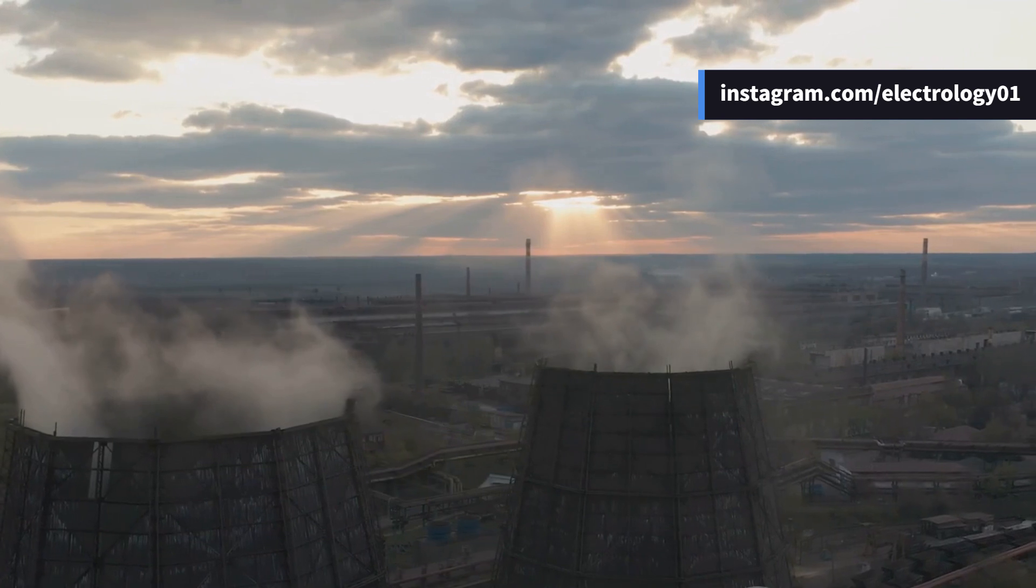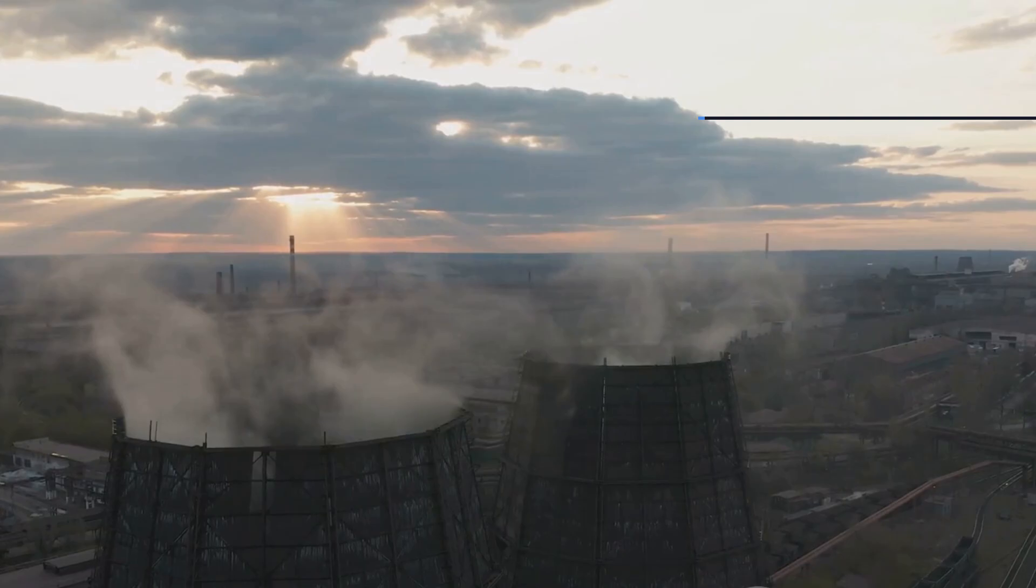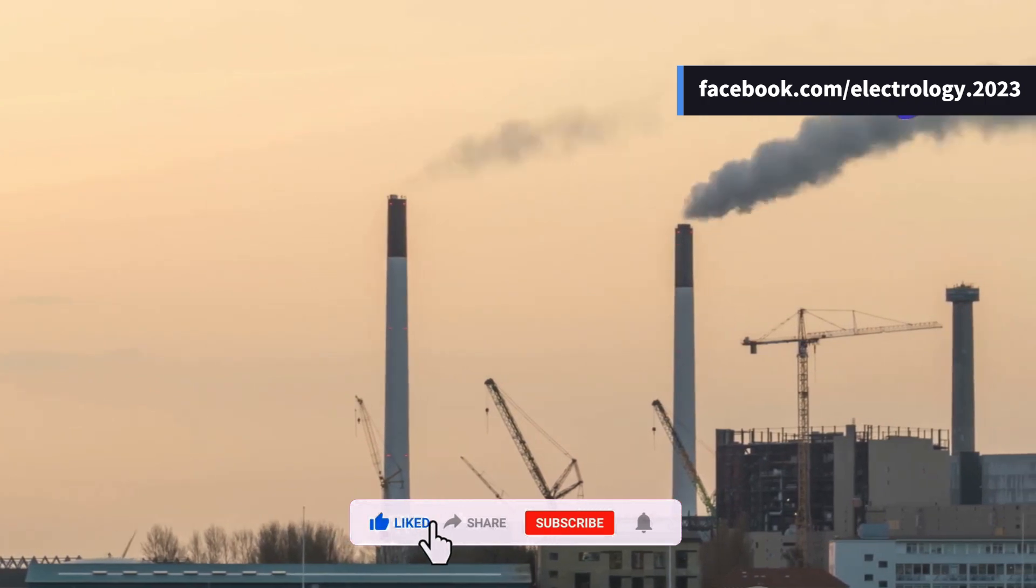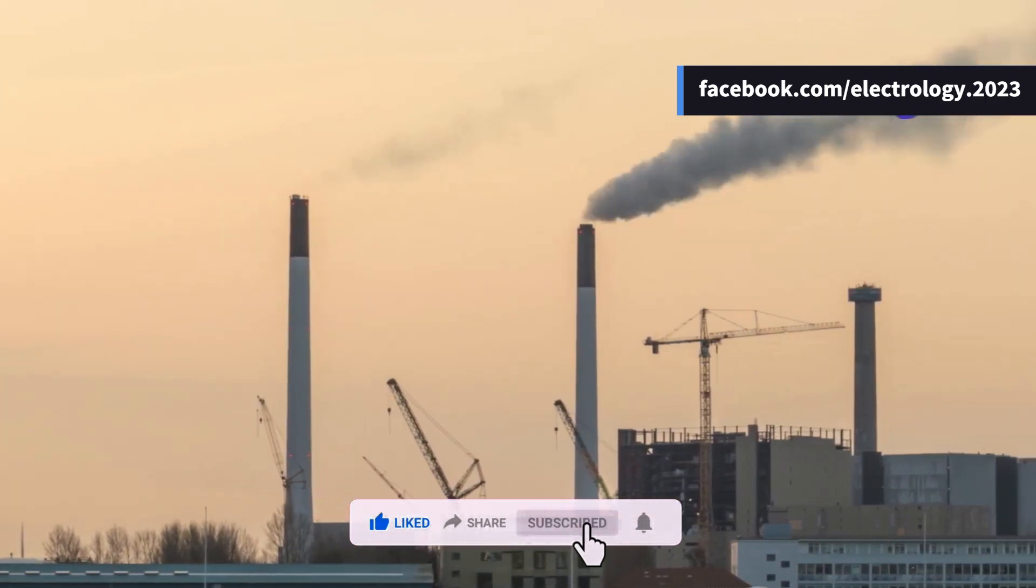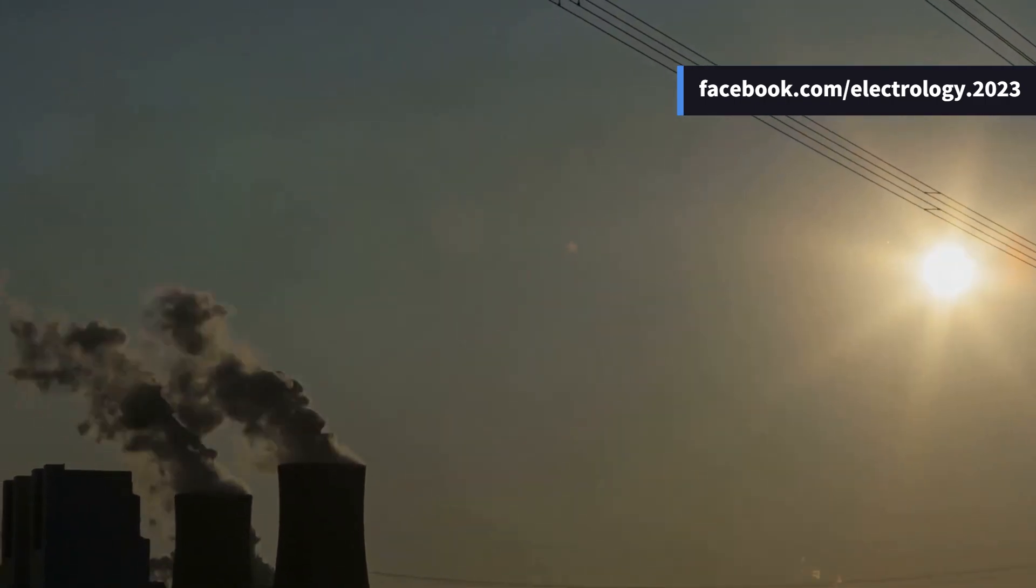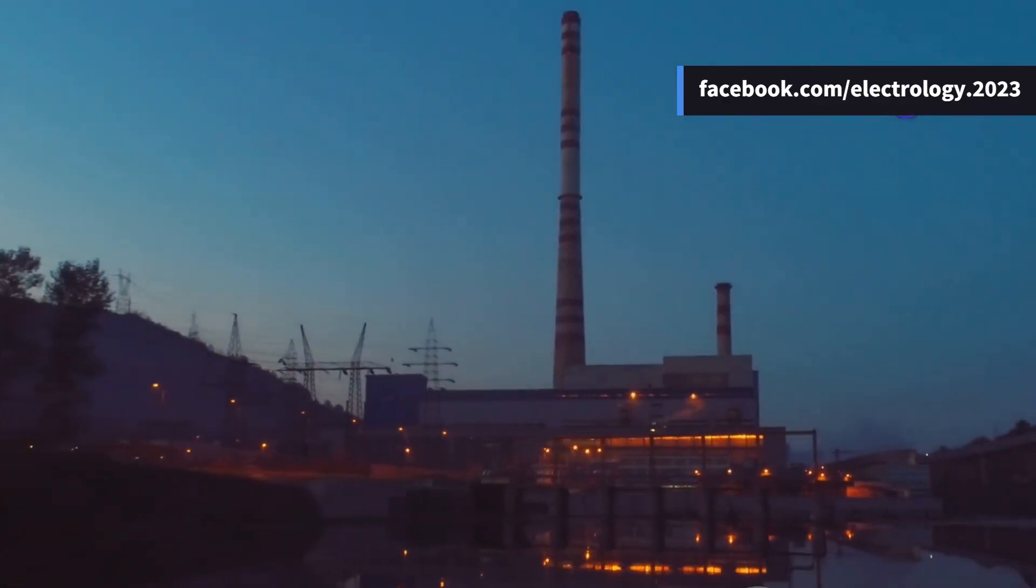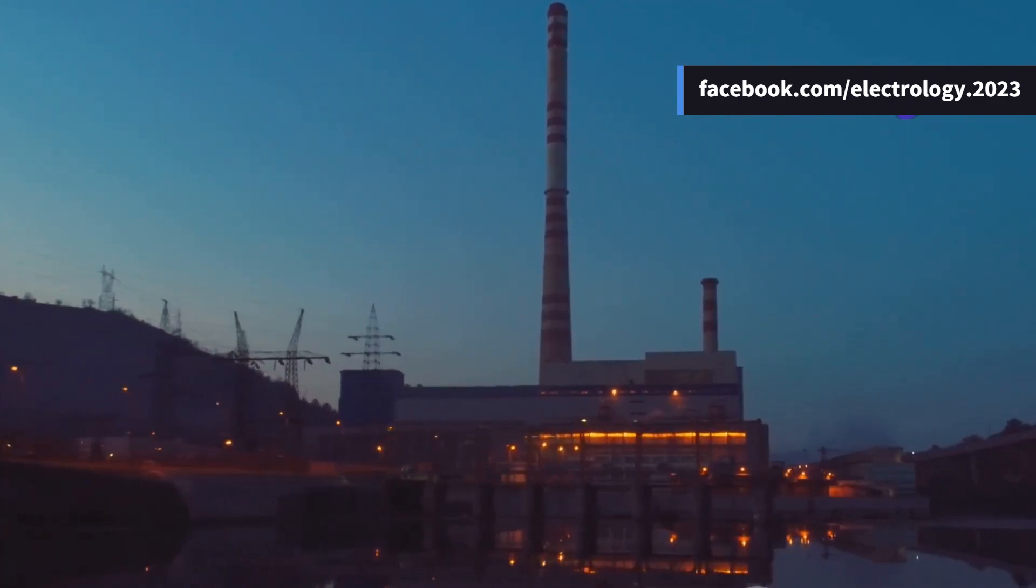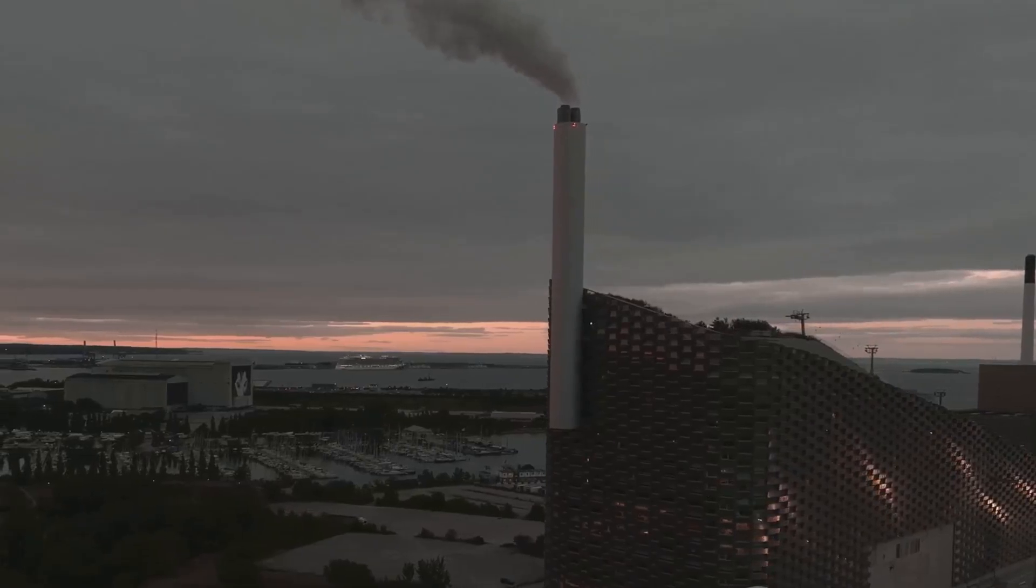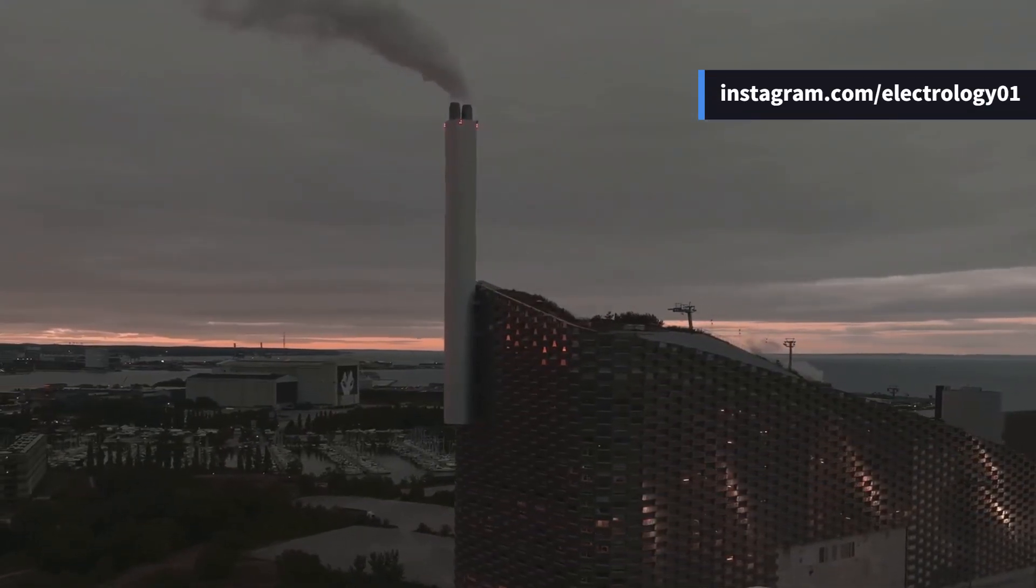It's a clever and efficient method to safeguard the machine from internal earth faults without needing complex CT arrangements. If you found this video helpful or learned something new today, make sure to like it. It really supports the channel and helps more people discover these concepts. And if you know someone studying electrical protection or working in power systems, don't forget to share this video with them too. I'm also really curious to hear your thoughts in the comments. Have you seen this protection scheme applied in real-world installations? Or faced challenges with fault detection in alternators? Share your technical experiences and questions down below. I'd love to start a deeper discussion with all of you.